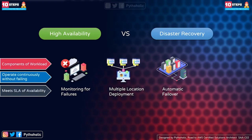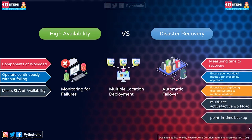Think rationally about the steps you take for high availability. When it comes to availability, you are more focused on the components or resources of the workload to serve customer demand so that you can operate continuously without failing, striving to meet the service level agreement for service availability. On the other hand, disaster recovery focuses on the time it takes to recover from a disaster.